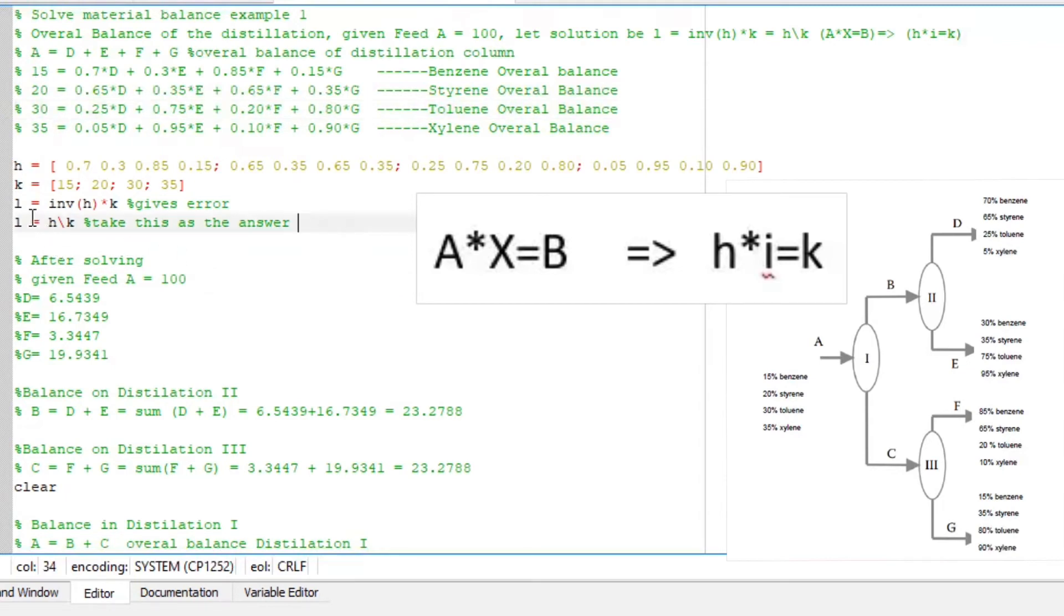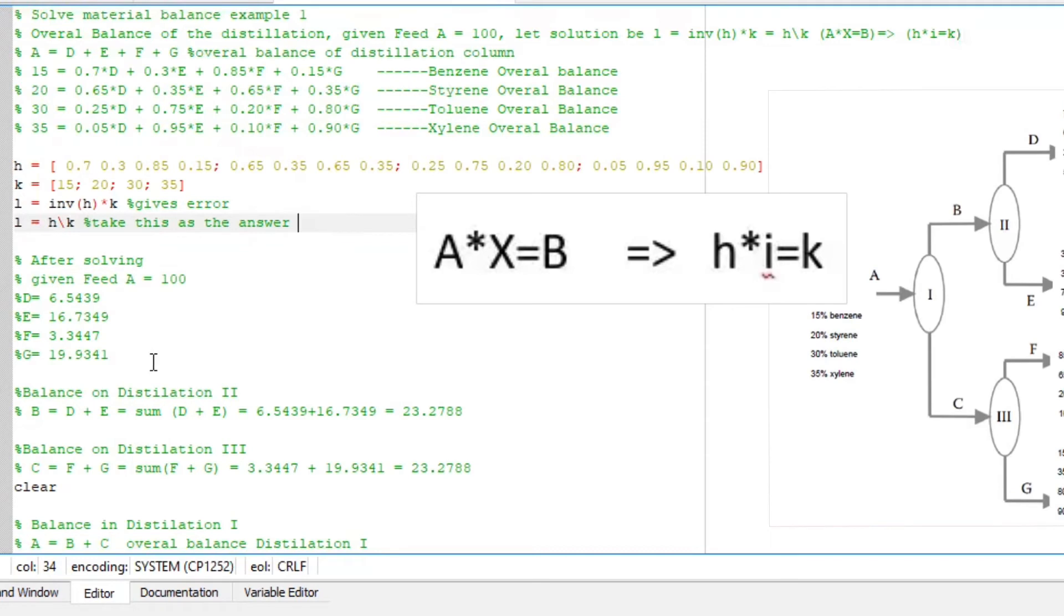Using the matrix law, I am going to solve for my unknowns. In this case, I equated it to L. And this is what I got, which is D, E, F, and G.